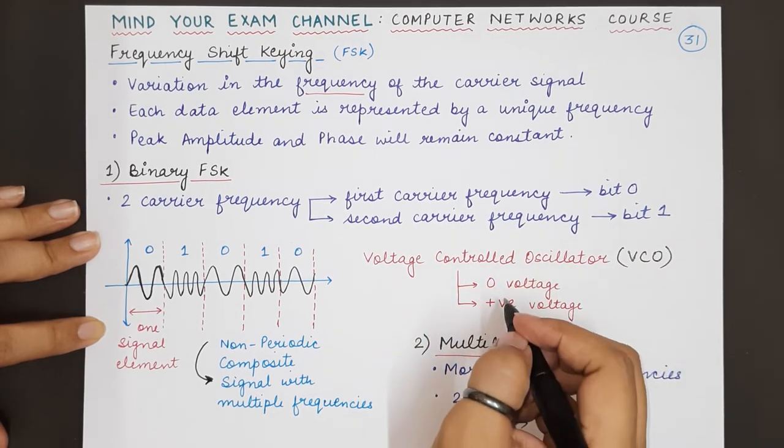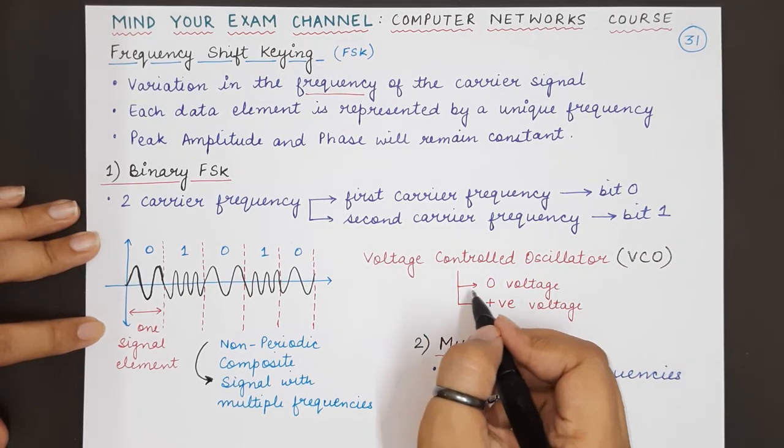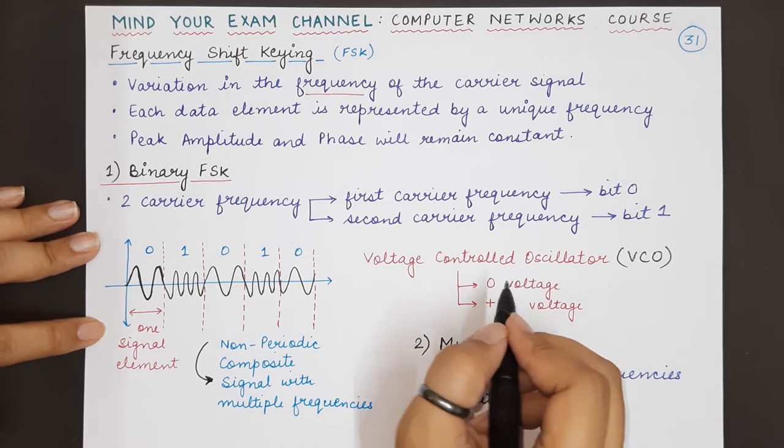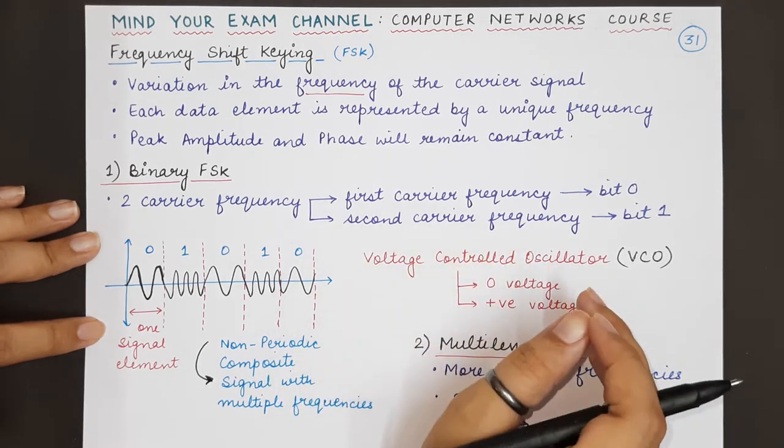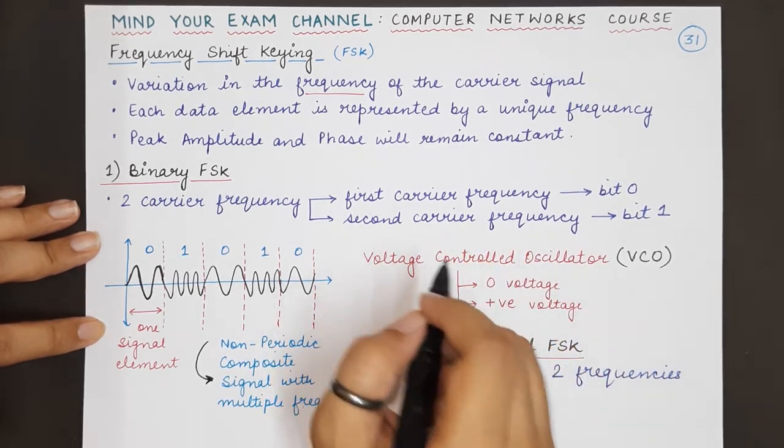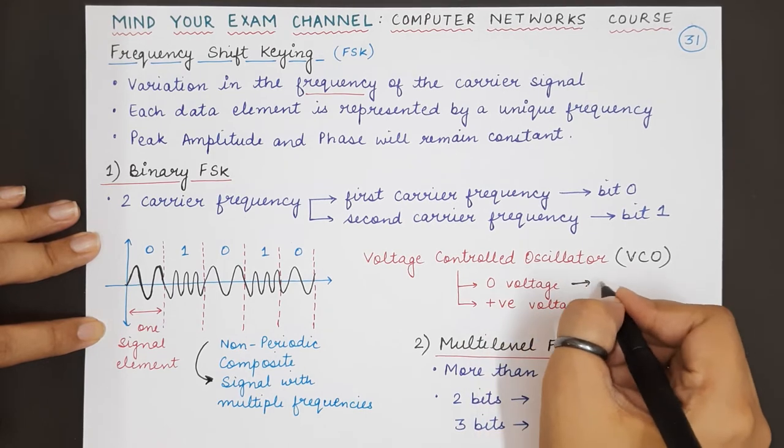In this oscillator, when 0 bit has to be represented, the oscillator maintains its original frequency.